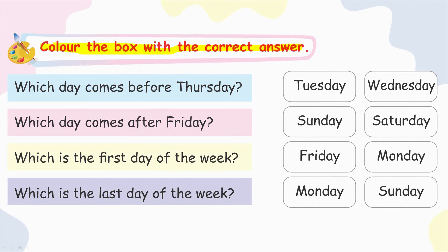Color the box with the correct answer. Which day comes before Thursday? Wednesday. Very good. Which day comes after Friday? Saturday. Very good.